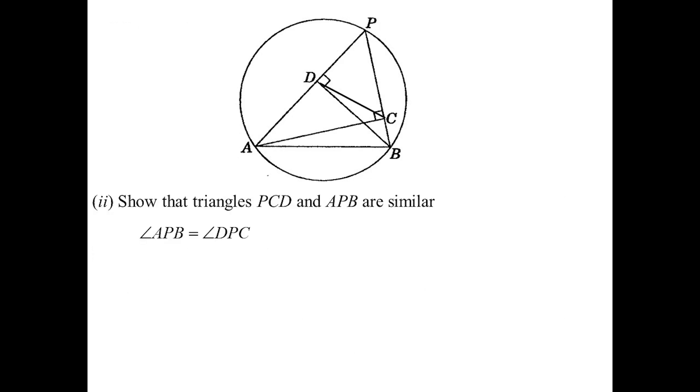PCD and APB - I've drawn in CD there so I can see the triangle they're referring to. We're going to show they're similar. APB and DPC are the same angle, so they're obviously equal - common angles. PDC is going to be the same as PBA because now I know that's a cyclic quad - exterior angle of a cyclic quad. That's two angles, and that's all we need for similar triangles - equiangular.